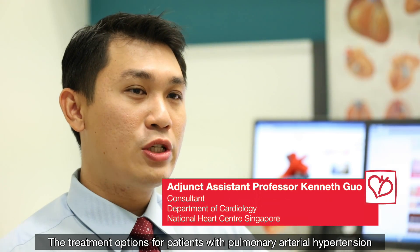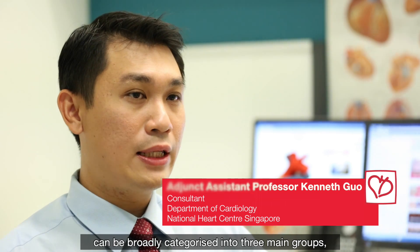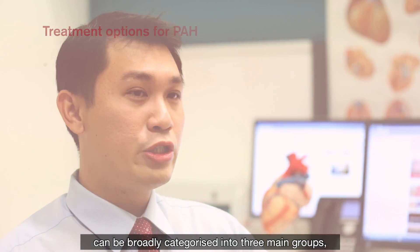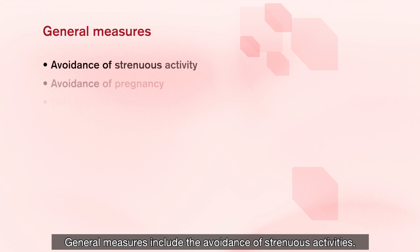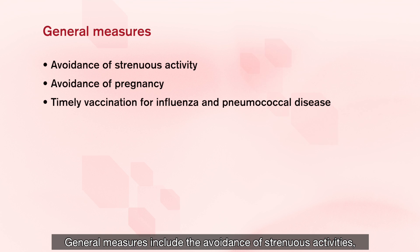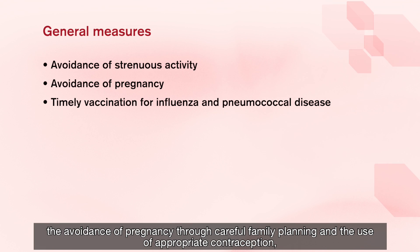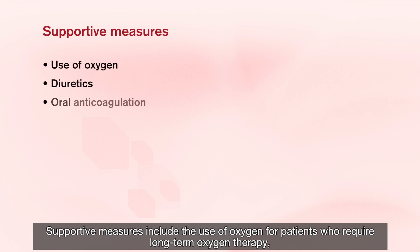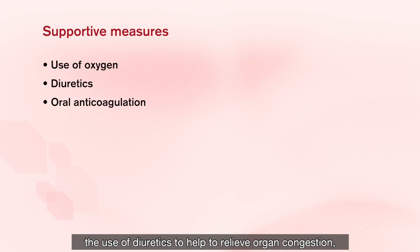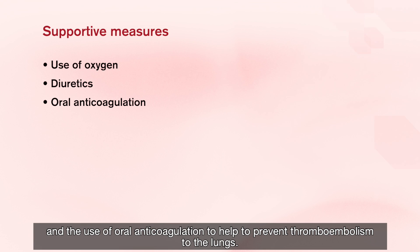The treatment options for patients with pulmonary arterial hypertension can be broadly categorised into three main groups: general measures, supportive measures, and PAH-specific therapy. General measures include the avoidance of strenuous activities, the avoidance of pregnancy through careful family planning and appropriate contraception, and timely vaccination for influenza and pneumococcus. Supportive measures include the use of oxygen for patients who require long-term oxygen therapy, the use of diuretics to relieve organ congestion, and the use of oral anticoagulation to help prevent thromboembolism to the lungs.